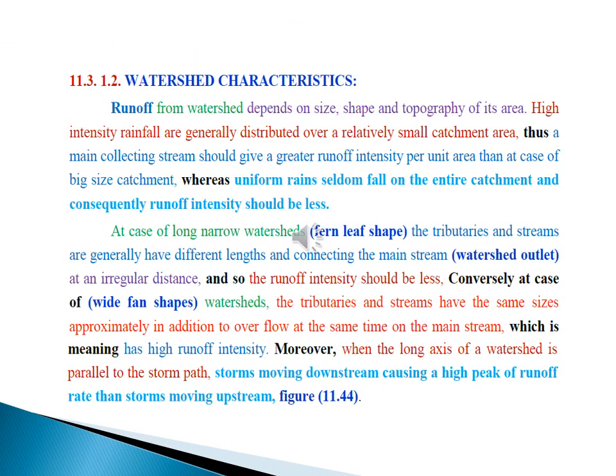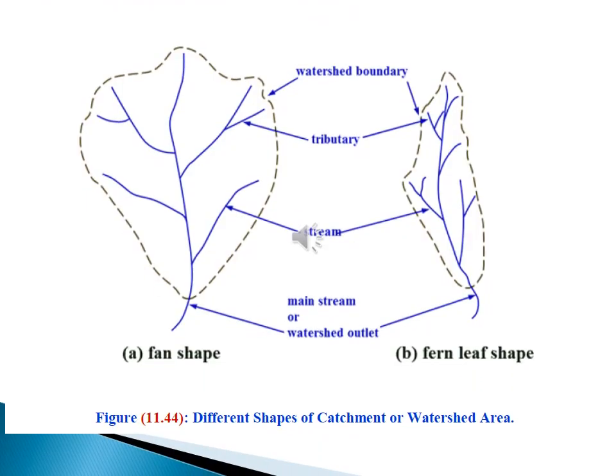Watershed characteristics. Runoff from a watershed depends on size, shape, and topography of each area. As an example, a case of long narrow watershed when leaf-shaped, the tributaries and streams generally have different places and connecting to the main stream at irregular distances, and so the runoff intensity fills convulsively. At the case of wide beam-shaped watershed, the tributaries and streams have the same sizes approximately, in addition to overflowing at the same time on the main stream, which is meaning has high runoff intensity.